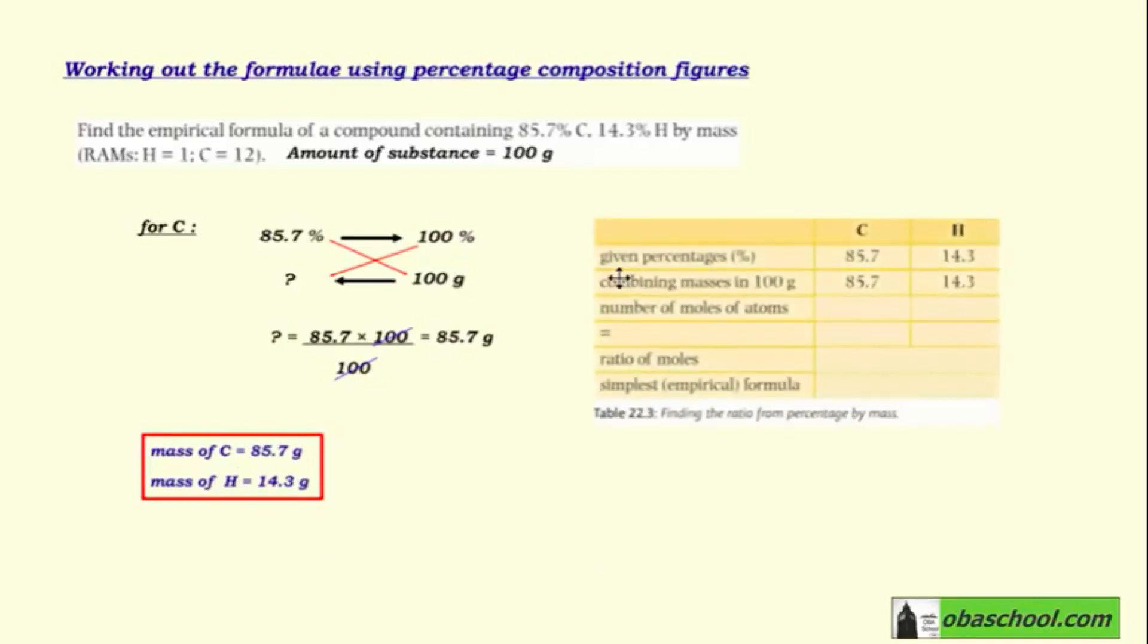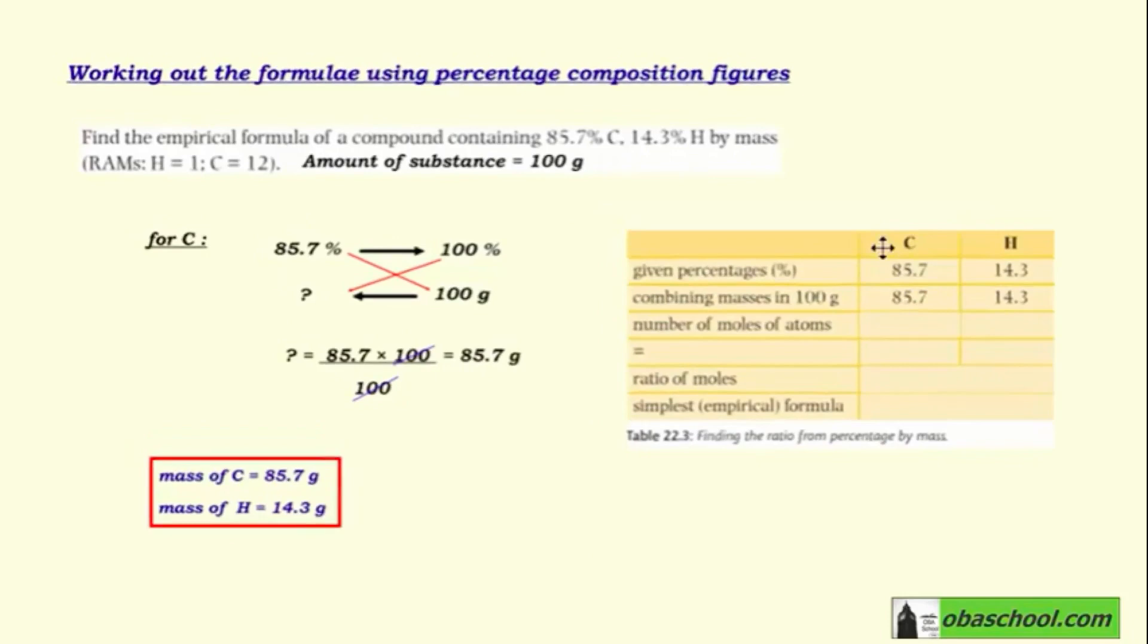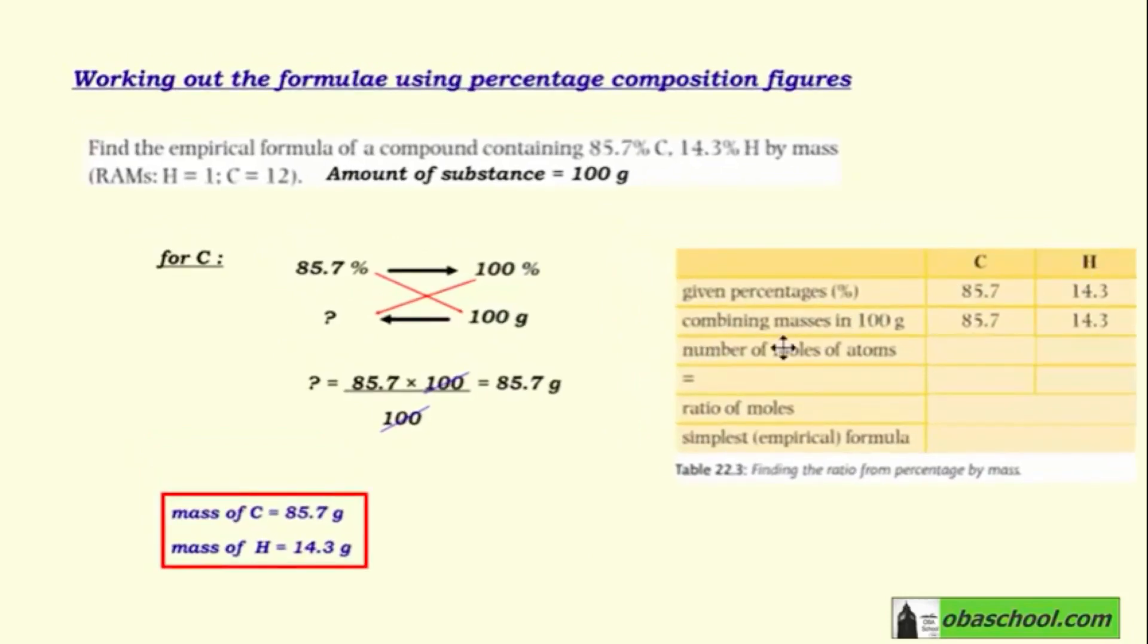In this table, we'll put the given percentages and the masses obtained in 100 grams. For carbon, it's 85.7 grams. For hydrogen, it's 14.3 grams.